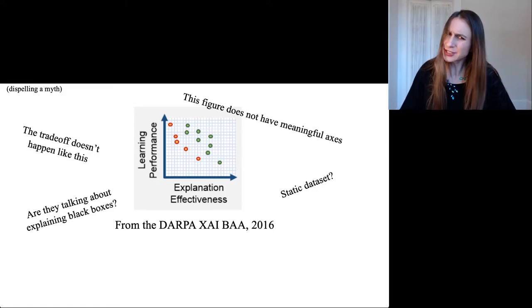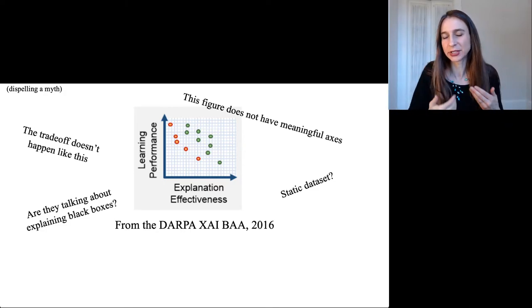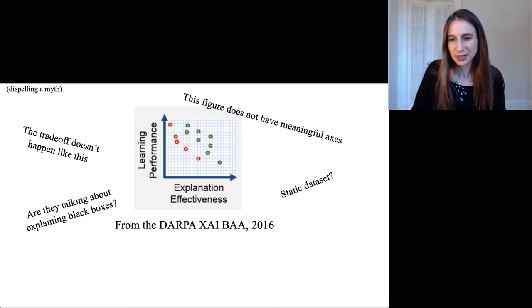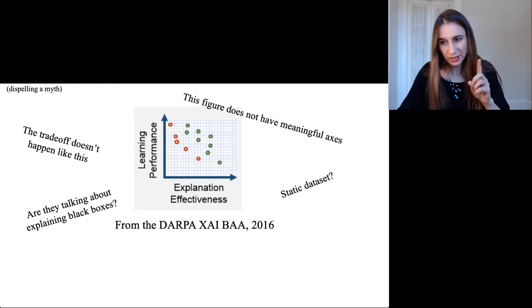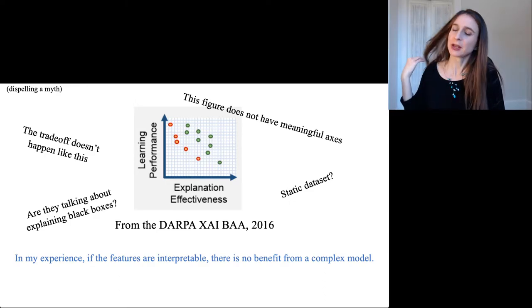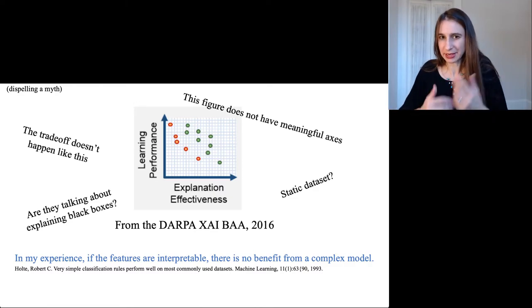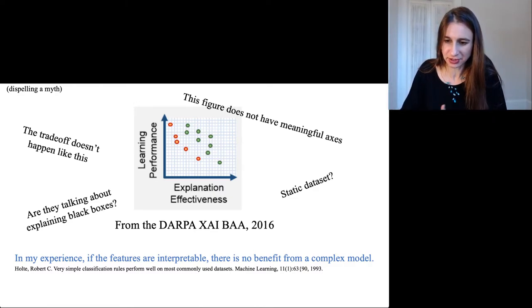The trade-off doesn't actually happen like this. In particular, for many different kinds of data sets, even if you had a static data set and ran a lot of different machine learning methods on it, in many cases they all perform the same, but it depends on the kind of data you have. In my experience, if the features themselves are interpretable, there doesn't seem to be any benefit from using a very complicated model, and that's true for many problems in criminal justice and health care. That's been noticed all the way back since 1993.